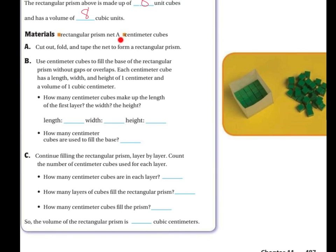Materials: a rectangular prism and centimeter cubes. If you cut out, fold, and tape together a rectangular prism such as this, you would use centimeter cubes to fill the base of the rectangular prism without any gaps or overlaps. Each centimeter cube has a length, width, and height of one centimeter and a volume of one cubic centimeter. So you can kind of see how they're doing the first layer at the bottom. How many centimeter cubes does it take to make up the length of the first layer, the width, and the height?